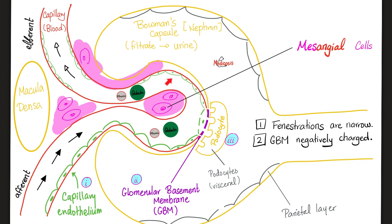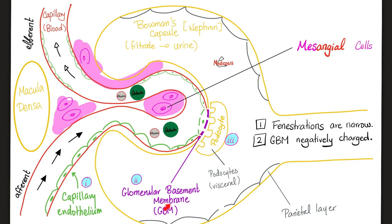Here is how your kidney looks. You have arterioles — afferent going in, efferent coming out. Between the vessels is the mesangium — mesangial cells. 'Meso' means middle, 'angio' means vessel. On the inside of the vessel you have endothelium, then the basement membrane, then epithelium. Endothelium is on the inside, epithelium is on the outside. Between them is the glomerular basement membrane.